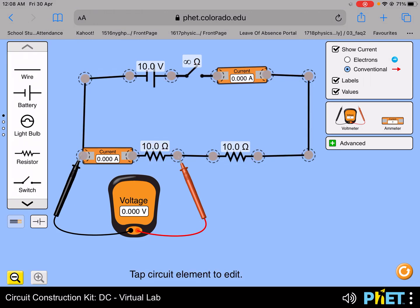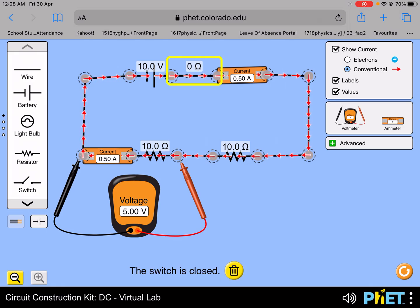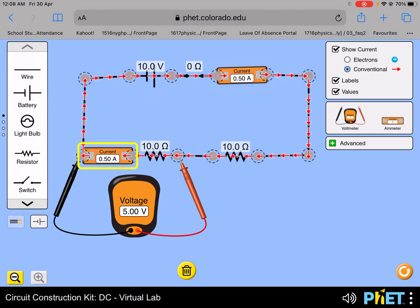As we now switch to the symbolic representation of the circuit, I'm going to close the switch. Notice that a current flows and it's the same current throughout the entire circuit, because we have an ideal voltmeter which takes negligible current passing through it.